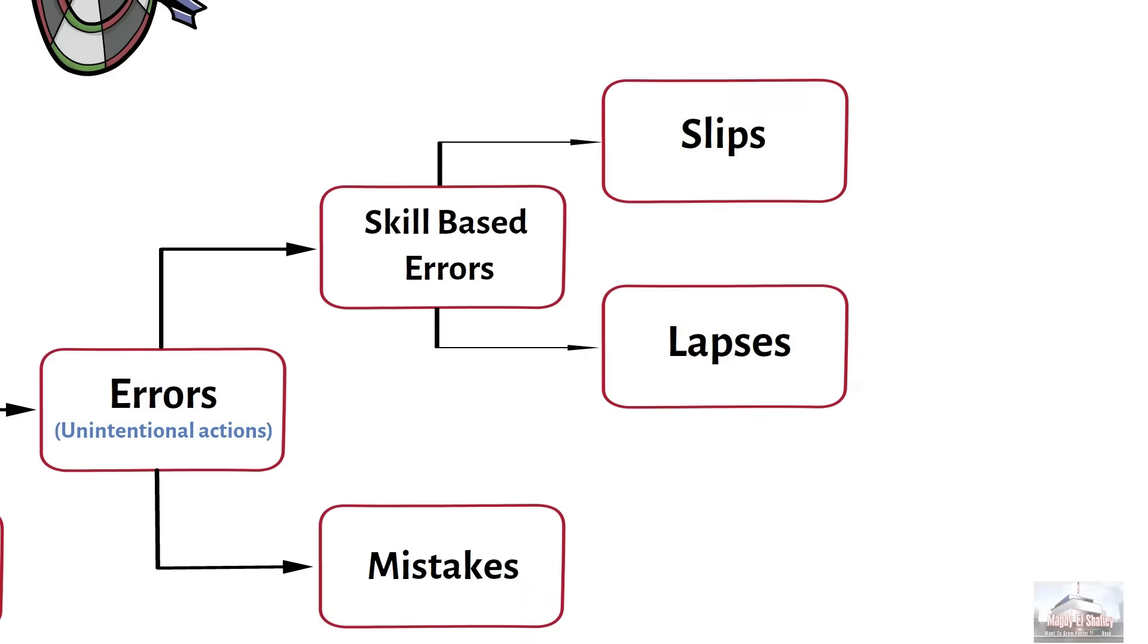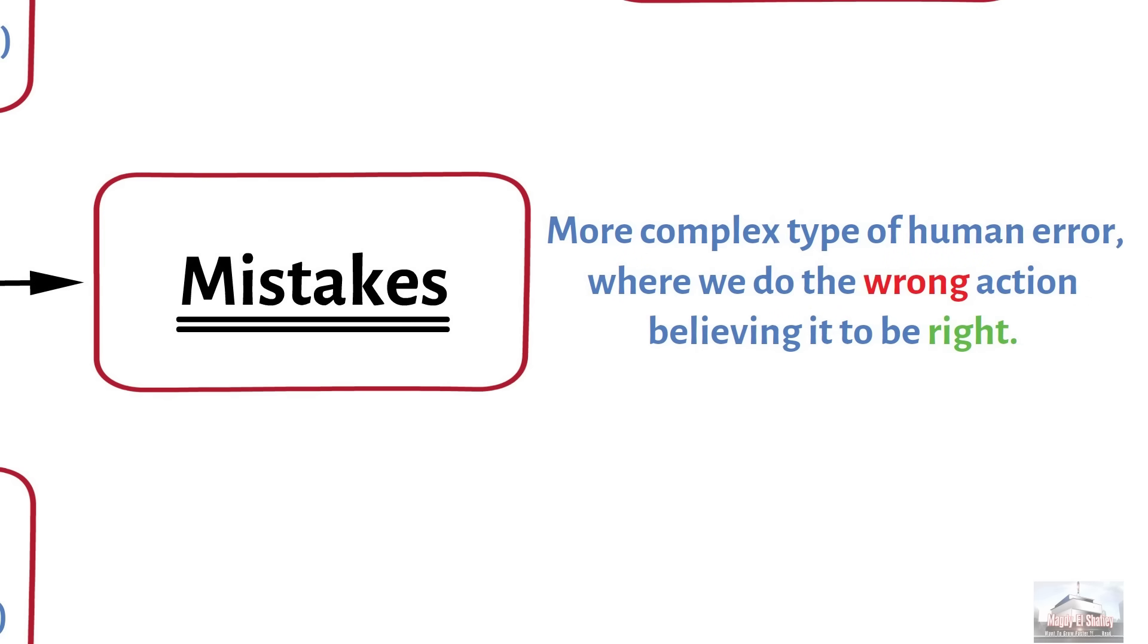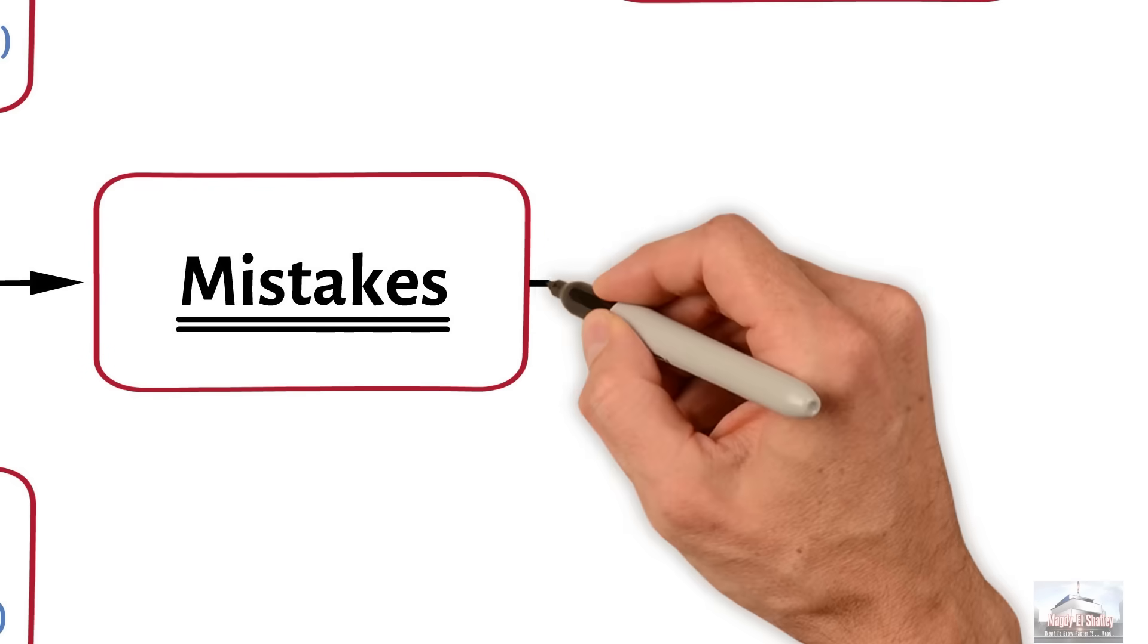On the other hand, mistakes. Mistakes are a more complex type of human error, where we do the wrong action, believing it to be right. So no distraction here or inattention. We are fully aware of what we are doing. Mistakes can be categorized into two types.